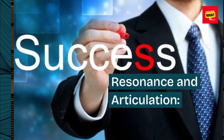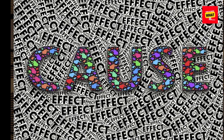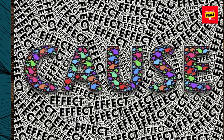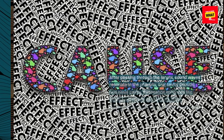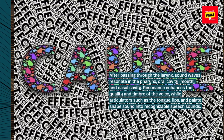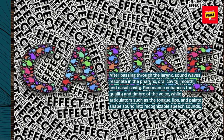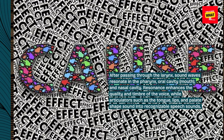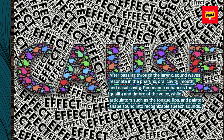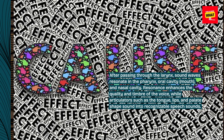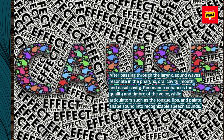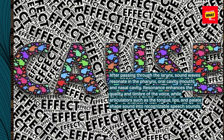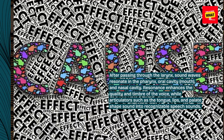Resonance and Articulation: After passing through the larynx, sound waves resonate in the pharynx, oral cavity, mouth, and nasal cavity. Resonance enhances the quality and timbre of the voice, while articulators such as the tongue, lips, and palate shape sound into recognizable speech sounds.